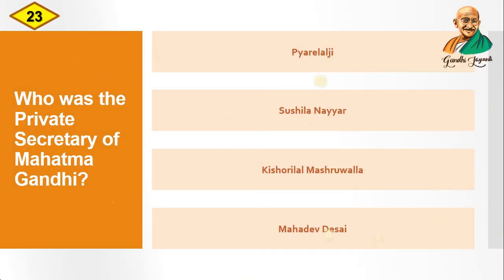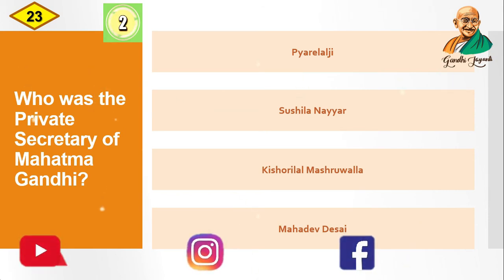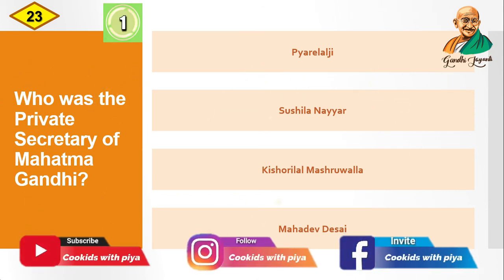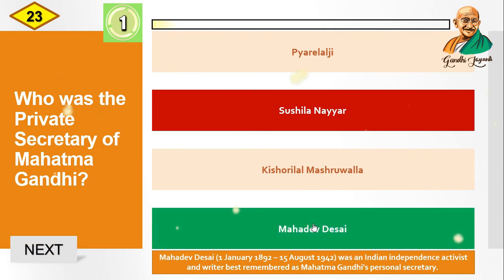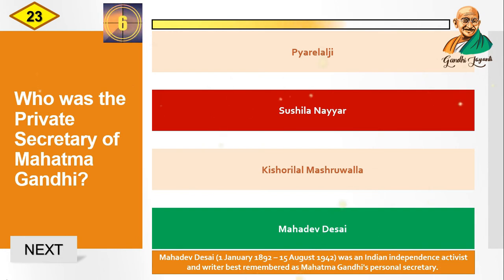Question: Who was the private secretary of Mahatma Gandhi? Options are: Pyarelal Ji, Susila Nayar, Kishorilal Mashruwala, Mahadev Desai. Initially answered as Susila Nayar — that is wrong. The correct answer is Mahadev Desai. Mahadev Desai was an Indian independence activist and writer, best remembered as Mahatma Gandhi's personal secretary.